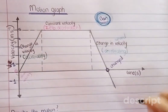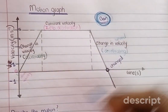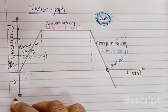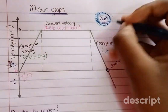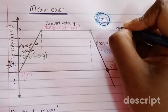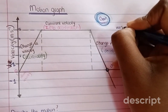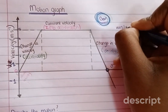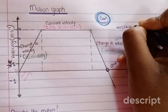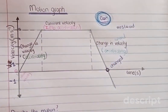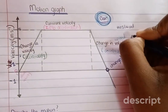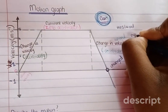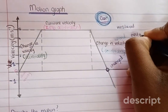The car changed its direction — now it's moving in the opposite direction. If this car was moving westwards, it changed its direction and it's now moving in the opposite of westwards, which is eastwards.